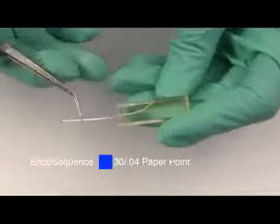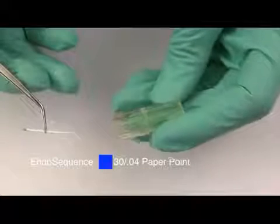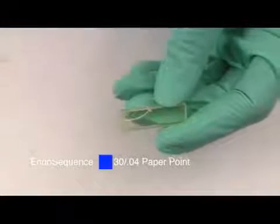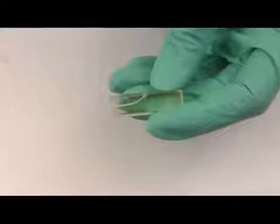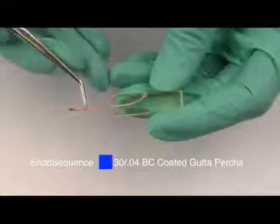Take the size 30-04 BC bioceramic coated point. These cones are stiffer than normal points and you can see that the cone gives you a very nice tug back.